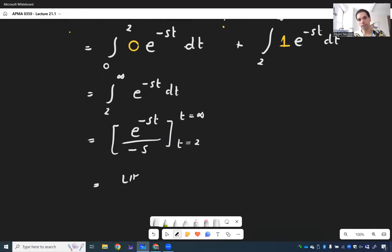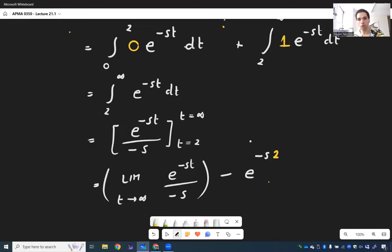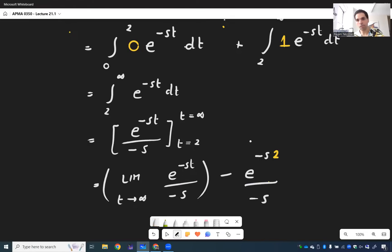This time from T equals two to T equals infinity, which here again becomes a limit as T goes to infinity of E to the minus ST over minus S, which again, you can assume is zero, minus E to the minus 2S over minus S.